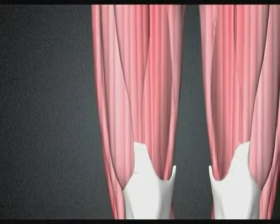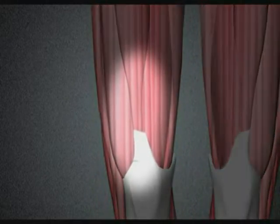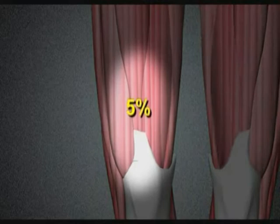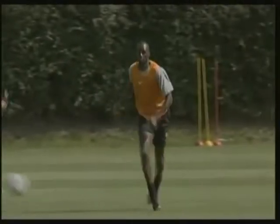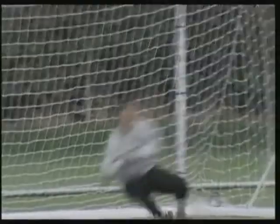The force of muscular contraction is transmitted to the bones by tendons. Muscle fibers taper into a tendon, which is very strong and will stretch by about five percent. This slight stretching acts as a shock absorber, protecting the muscles and bones against impacts or other excessive forces.